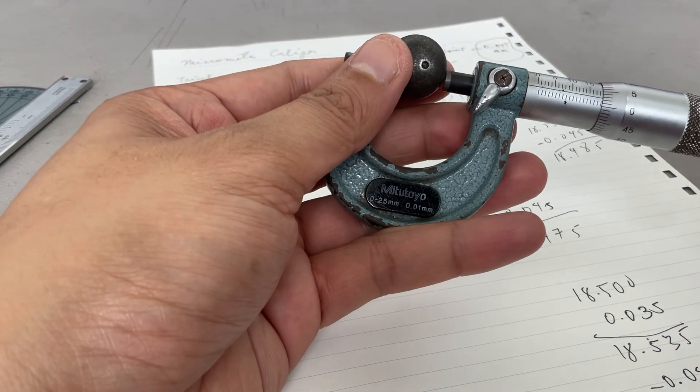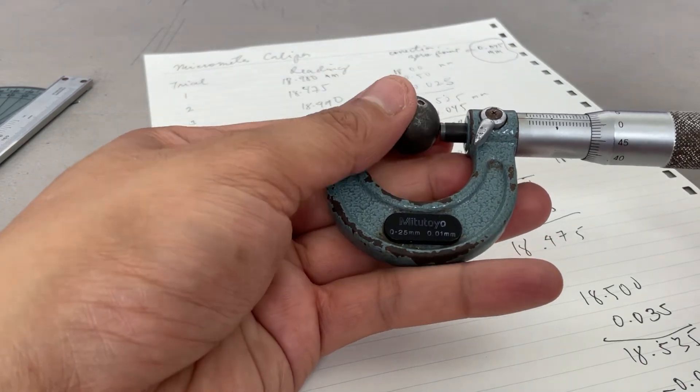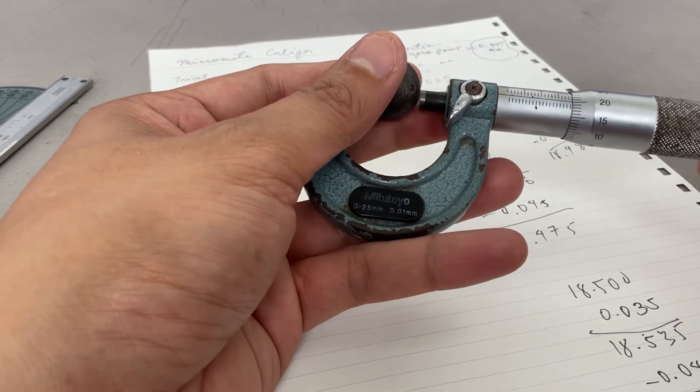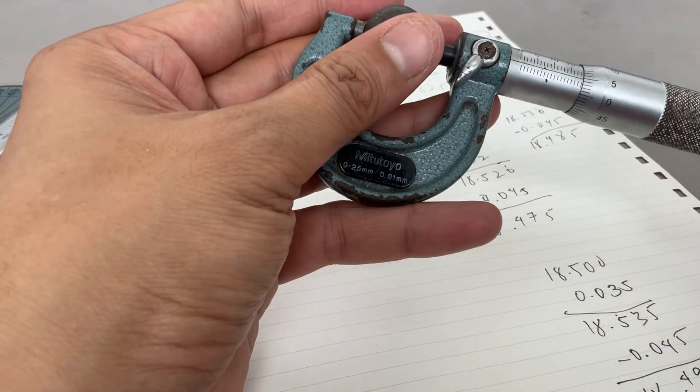And so on. You can do until 10 trials on different parts of the diameter of the sphere.